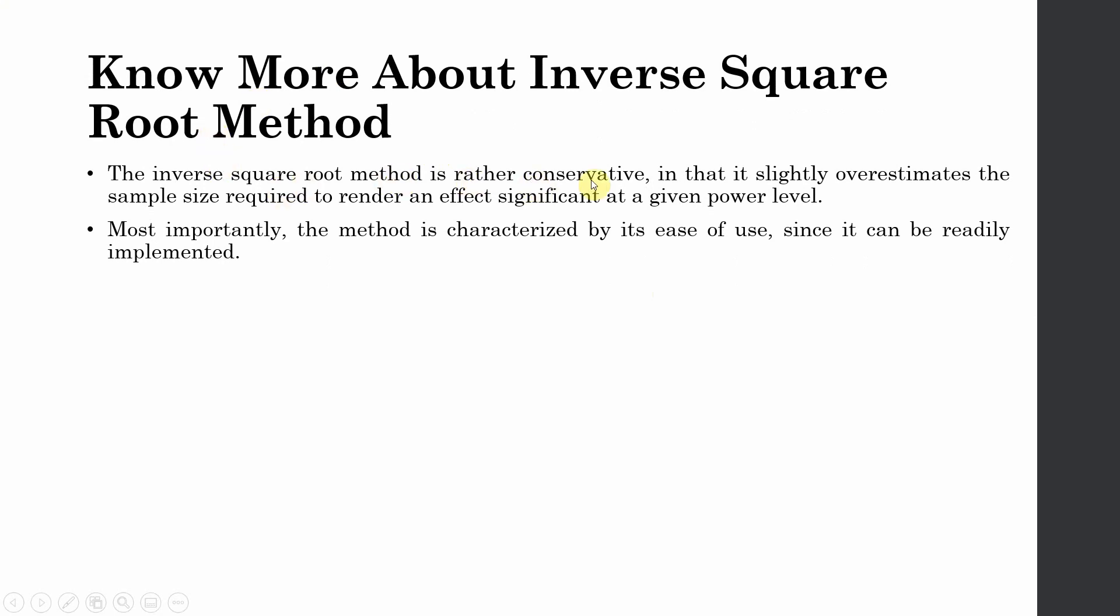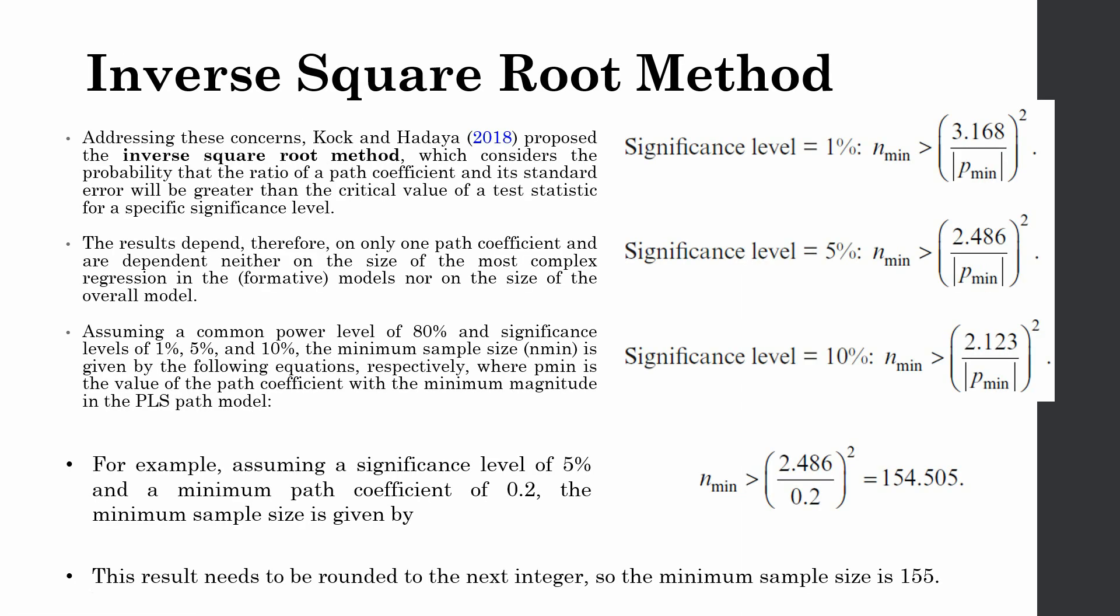The inverse square root method is rather conservative in that it slightly overestimates the sample size required to render an effect significant at a given power level. Most importantly, the method is characterized by its ease of use. You simply need to identify your significance level and what is your path coefficient. What is the strength of impact that you want to consider in your study?